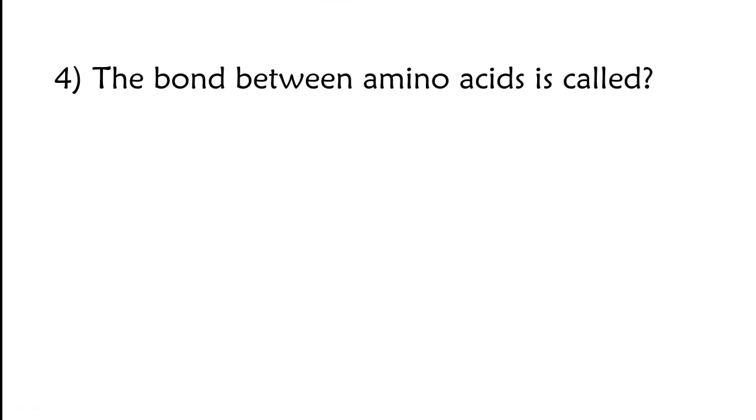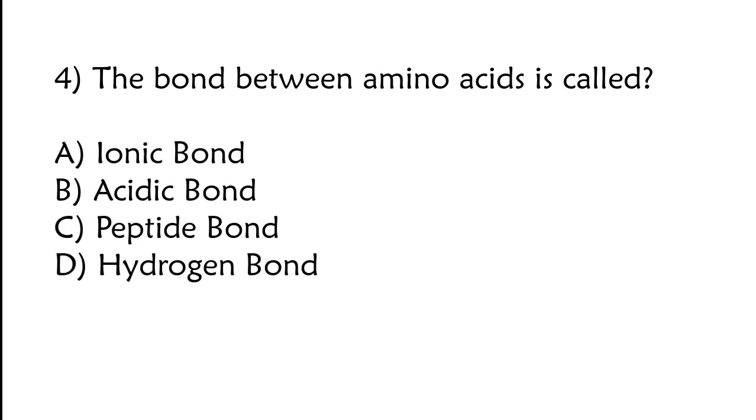The bond between amino acids is called ionic bond, acidic bond, peptide bond, or hydrogen bond. The correct answer is option C, peptide bond.